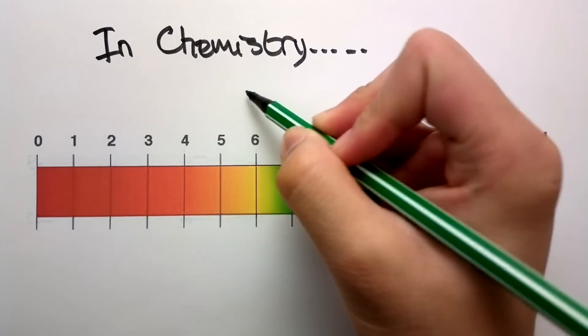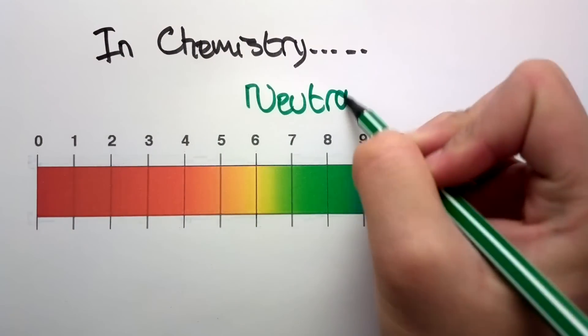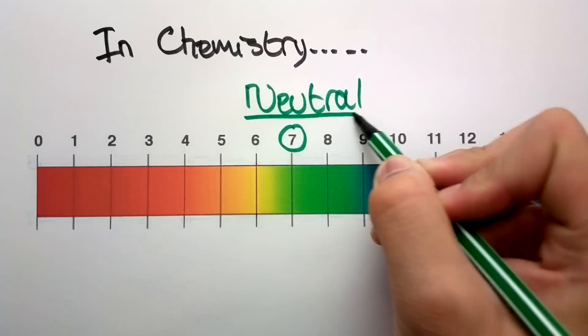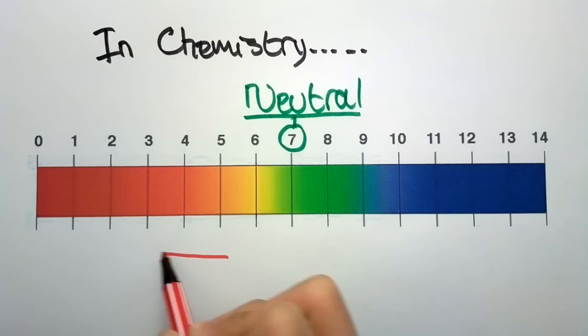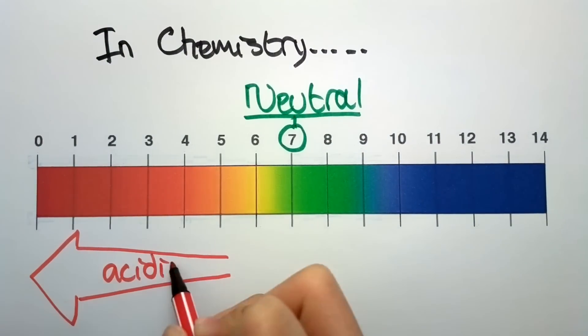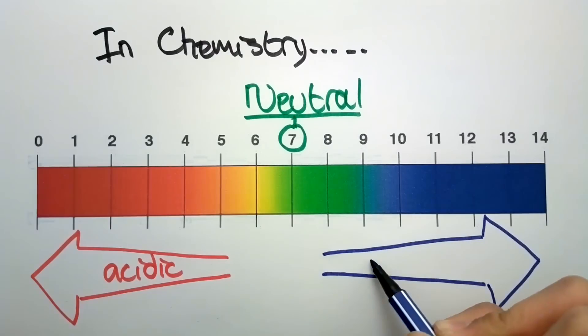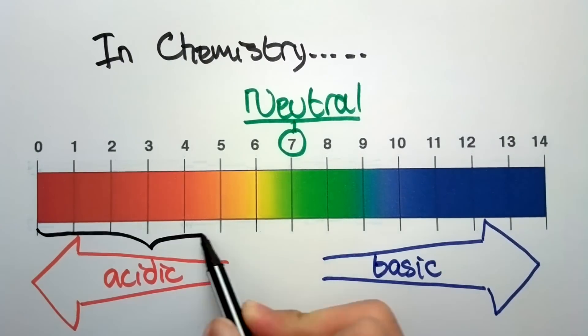And in chemistry, when something is neutral, it most of the time means something that has around a number 7 on the pH scale. And so an acid solution has a number smaller than 7, and an alkaline solution has a number bigger than 7.